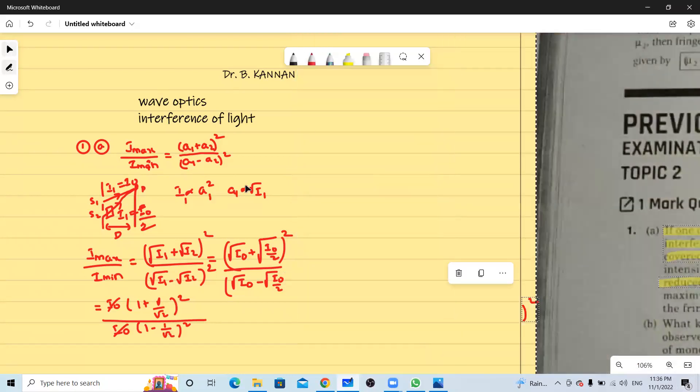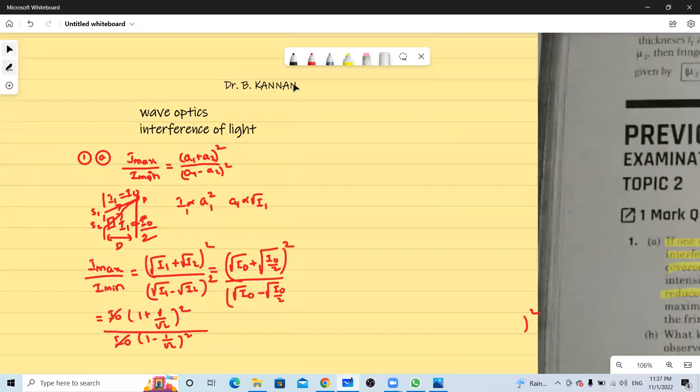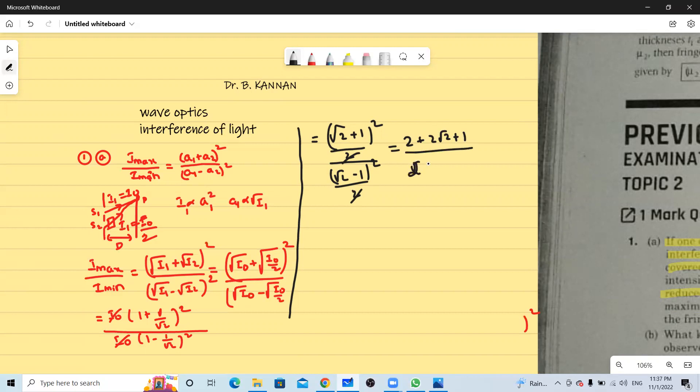So let us take LCM for this. So this will now become root 2 plus 1 the whole square divided by 2 and then divided by root 2 minus 1 the whole square divided by 2.